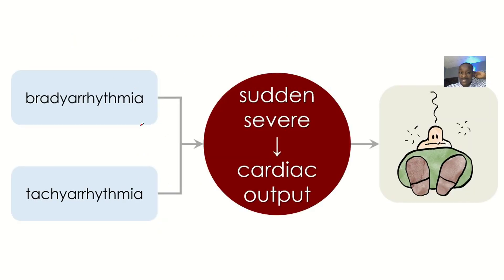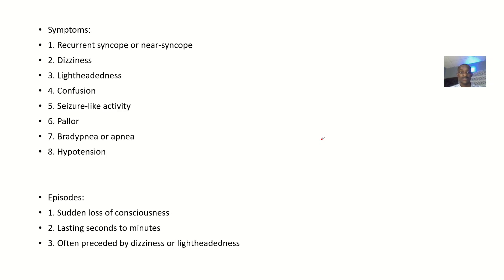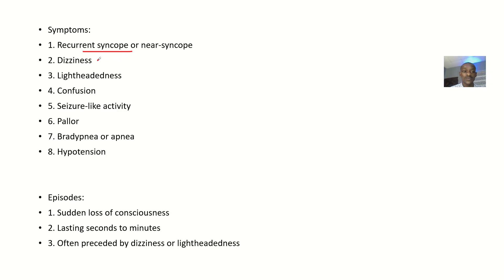In Adams-Stokes syndrome, there could be bradycardia or tachycardia, but it leads to a sudden severe decrease in cardiac output, resulting in fainting episodes. The first symptoms include recurrent syncope or near-syncope — either the patient has fainted or has nearly fainted. There's also dizziness, lightheadedness, confusion, and seizure-like activity.